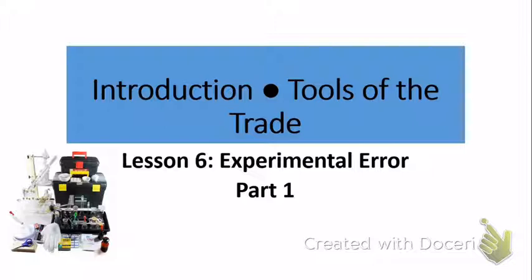Let's get started with Lesson 6, Experimental Error, Part 1. It's important to understand that when you perform an experiment or do a lab, there's always going to be error in your lab report. This is because of limitations in your instruments, which goes along with significant figures from Lesson 5. Also, sometimes our experimental design or procedure is not perfect. And sometimes instruments haven't been calibrated correctly, giving us incorrect data.